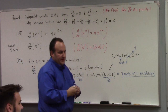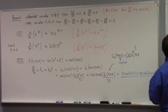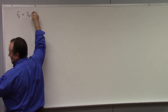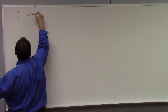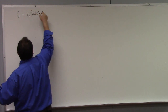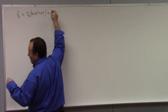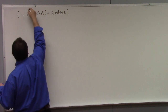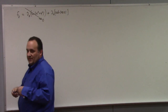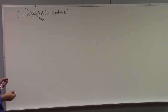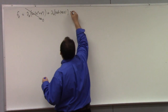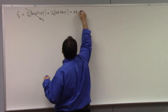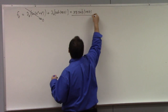Now, the z partial derivative: the partial of z of cosine(x² + y²) is zero because there is no z dependence in that term. And the partial of z of cosh(xyz): differentiating the inside with respect to z gives xy, and we get xy sinh(xyz). So f sub z equals xy sinh(xyz).